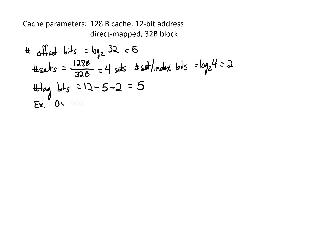As an example of how you would break out these different parts, if we had an address of hex 0x060, which in binary breaks down into 0,0,0,0,0,1,1,0,0,0,0,0 — since we have 5 offset bits, the least significant 5 bits are the offset. With 2 set or index bits, the next 2 bits would be our index, and then everything else that remains would be our tag bits.